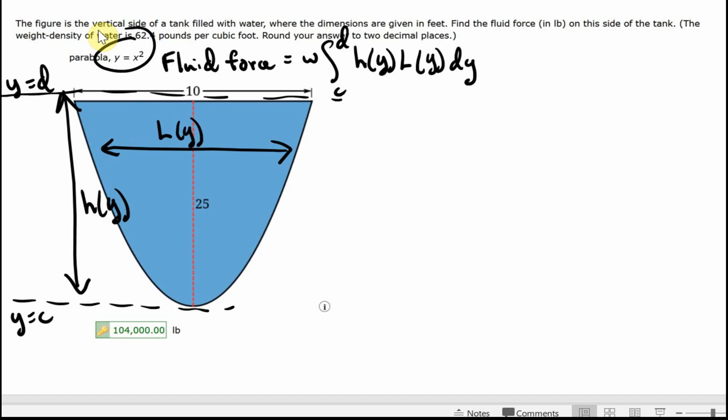Now for me, it was very difficult to calculate this with respect to Y. And that happens. So what I did was to translate this with respect to X. And I think for most of us, we are comfortable with that. So this is the weight density times the integral as that goes from A to B of H of X times L of X times DX.